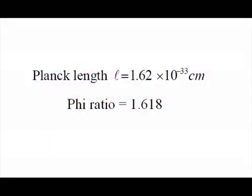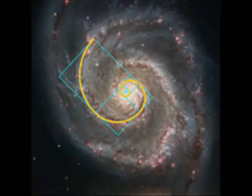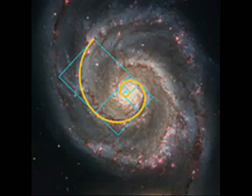This is important because the Planck length relates directly to the Fibonacci number and phi-golden ratio, which is a key mathematical element in all self-replicating systems. The question is, what is replicating itself? And why?